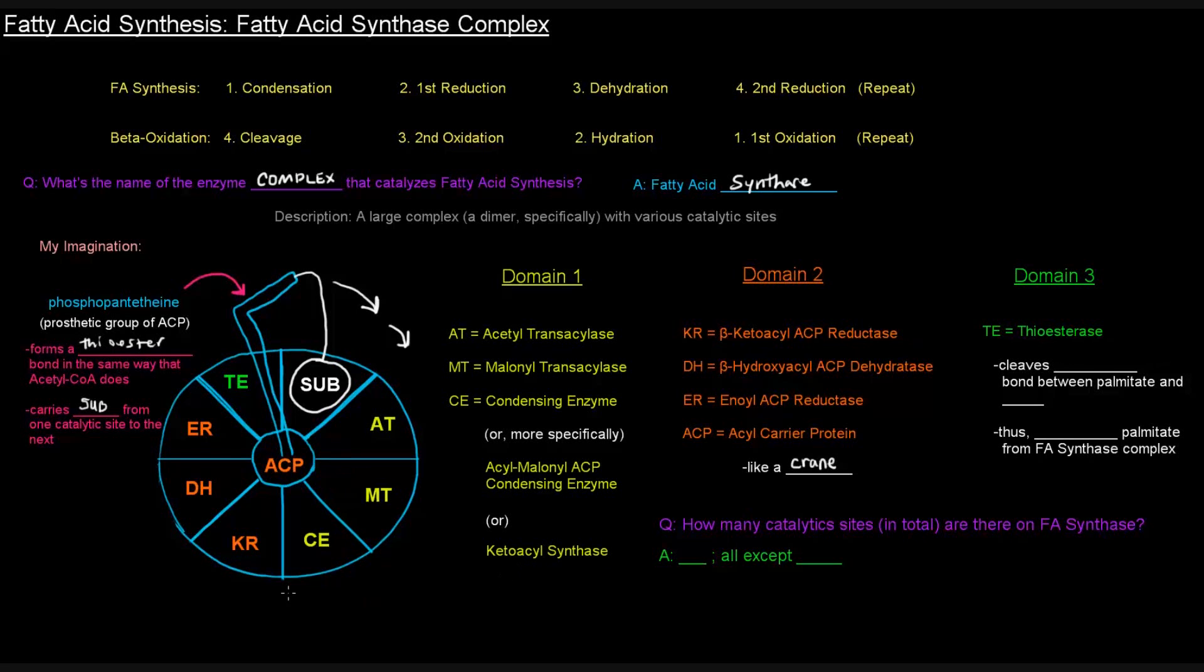That ketoacyl group moves to the next site, which is the beta-ketoacyl-ACP reductase depicted by KR here, and then we have the DH for the ER and the TE, so on and so forth. But essentially, it kind of goes, like I said, in this direction, just like this around the way, until we keep adding two carbon units by following this path. So the four actual steps of fatty acid synthesis, or I call it beta reduction, is the condensation step, which occurs with condensing enzyme.